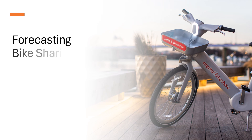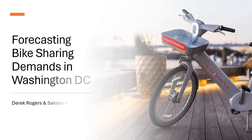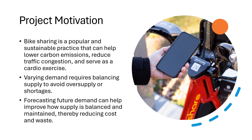Hi, my name is Derek and today Sakhova and I will be going over Washington DC bike sharing data and forecasting future trends. Washington has a bike sharing system where people can rent a bike at a station, then ride to their destination where they return it to another docking station. This form of public transportation helps reduce carbon emissions and traffic congestion.